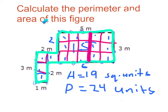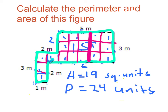Calculate the perimeter and area of this figure. So, five, three, six, two, one, two, two, two. Because if this is three, this is one here, so this is going to be two. And this is going to be six because this is going to be five, and plus one equals six. So, this area is 19 square units and P is 24 units.